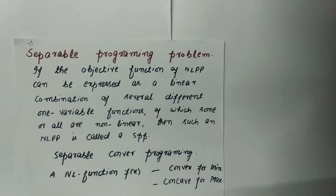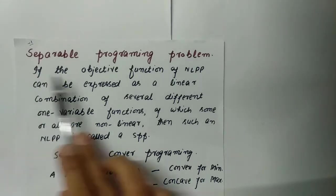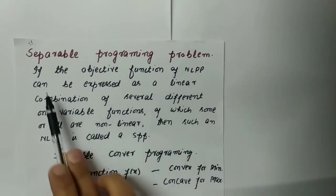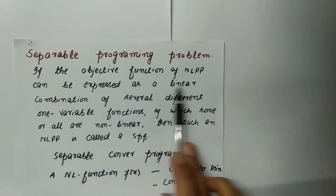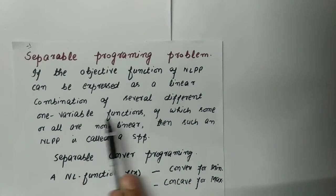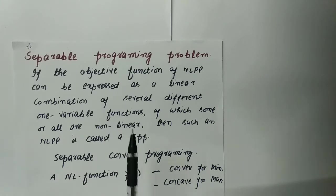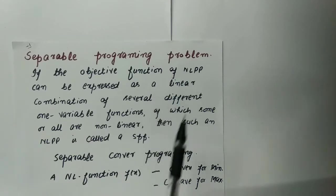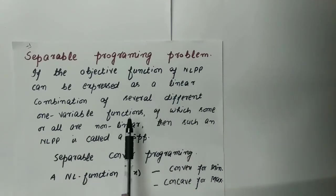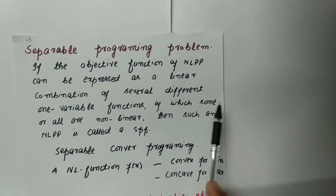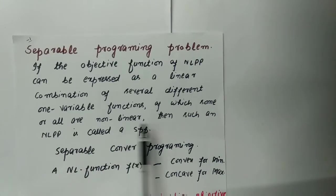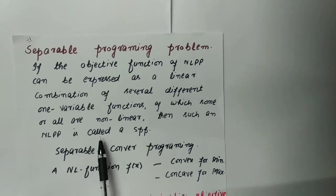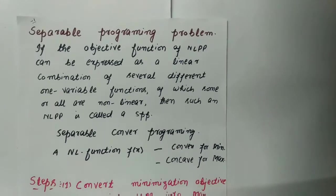First of all, we will discuss what is a separable programming problem. If the objective function of a nonlinear programming problem can be expressed as a linear combination of several one-variable functions — that is, if we can express the objective function as a linear combination of several different single-variable functions of which some or all are nonlinear — then such a nonlinear programming problem is called a separable programming problem.